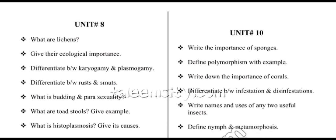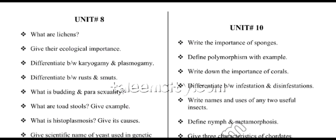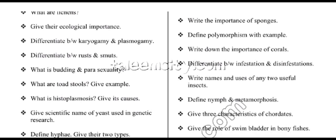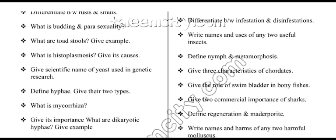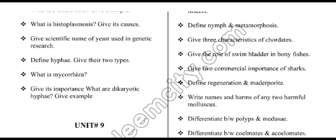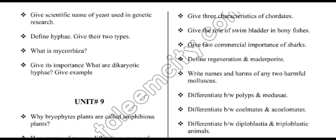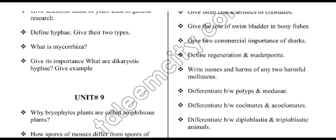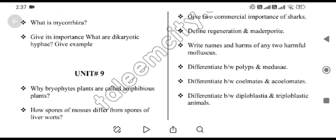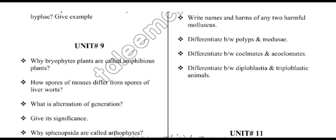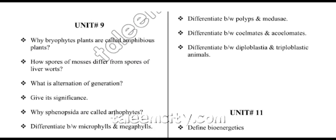From unit number ten, we have: importance of sponges; polymorphism with example; importance of corals; differentiate between infestation and disinfestation; name and uses of any two useful insects; nymph and metamorphosis; key characteristics of chordates; role of swim bladder in bony fishes; two commercial importances of sharks; regeneration and trephocyte; names and harms of any two harmful molluscs; differentiate between polyps and medusa; differentiate between coelomates and acoelomates; differentiate between diploblastic and triploblastic animals.